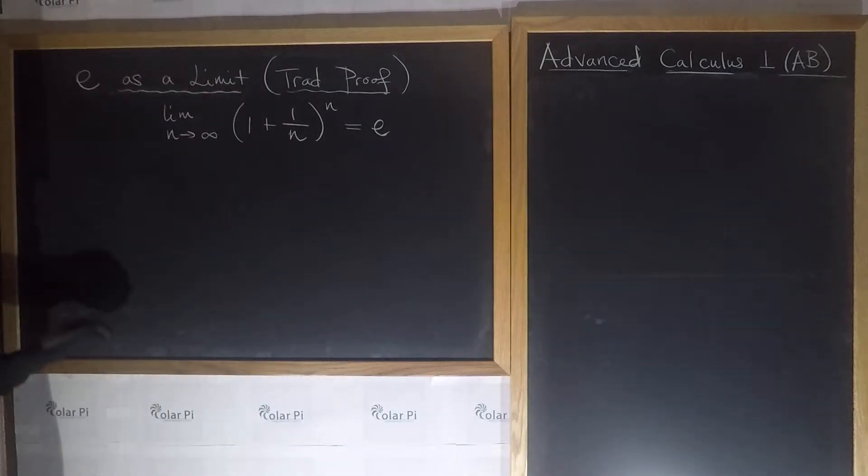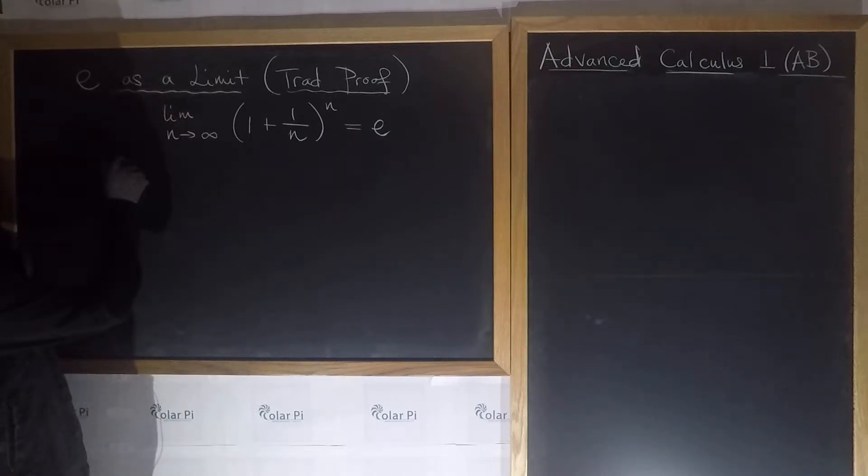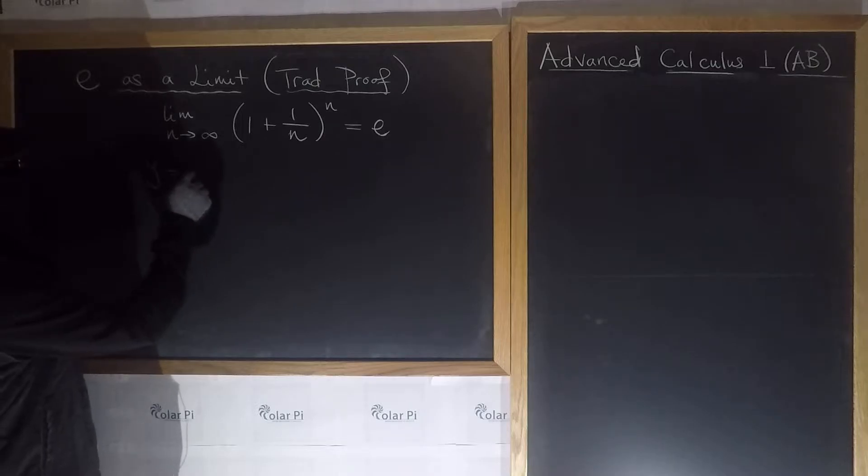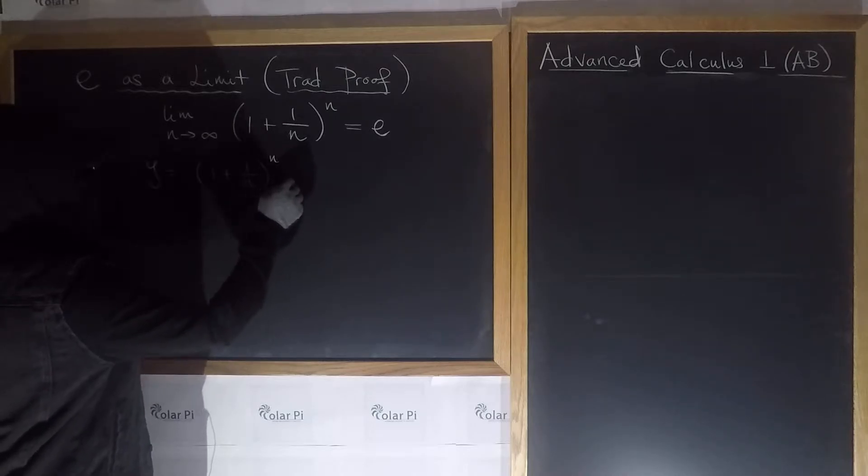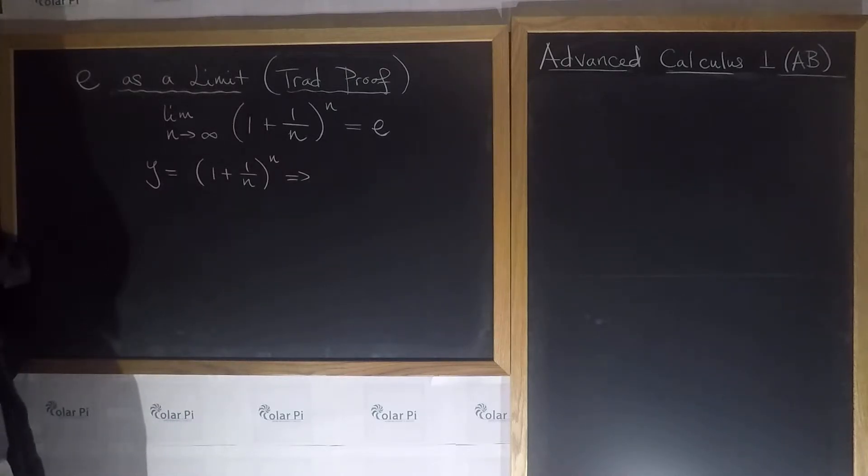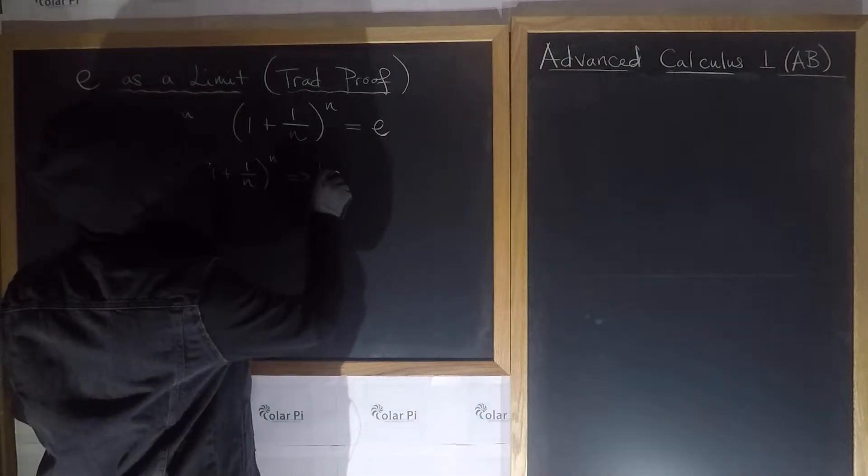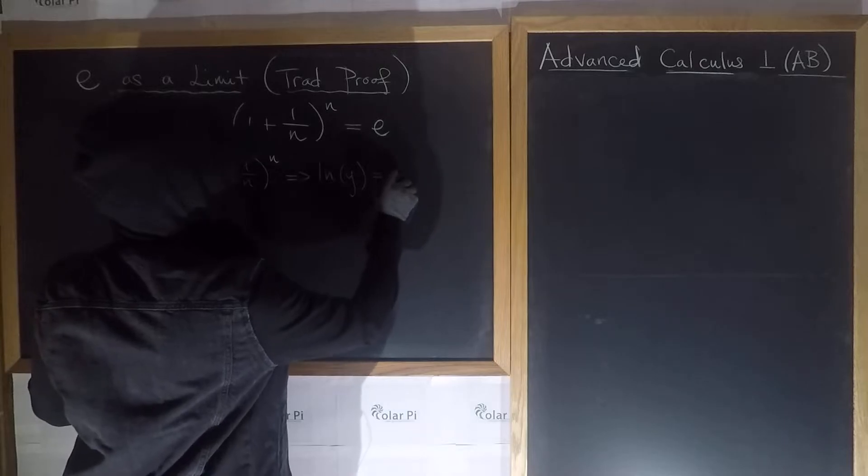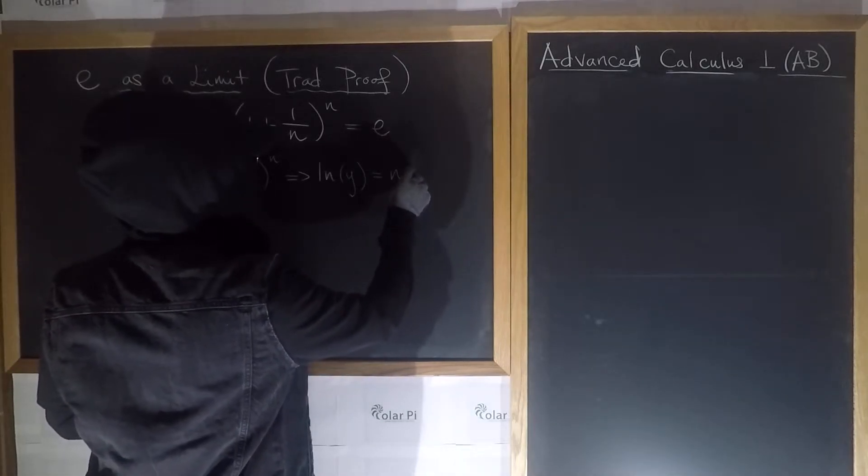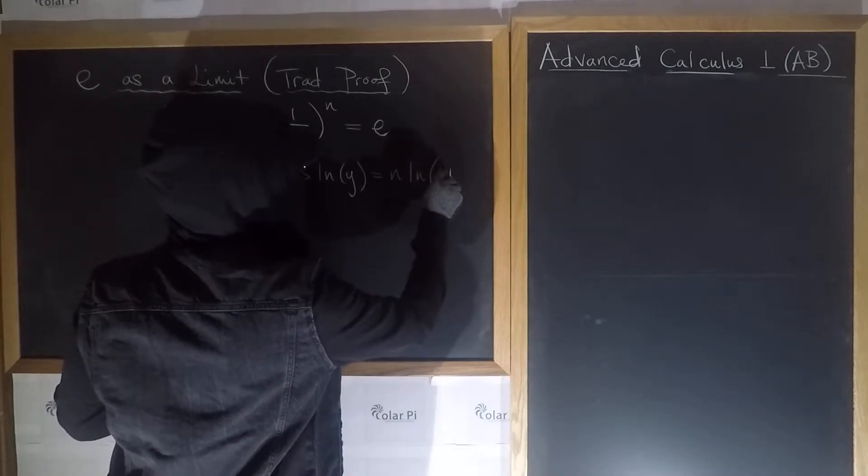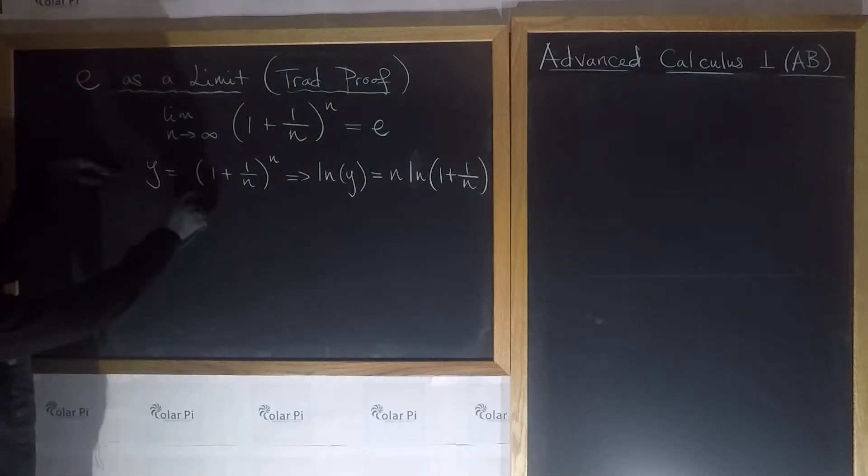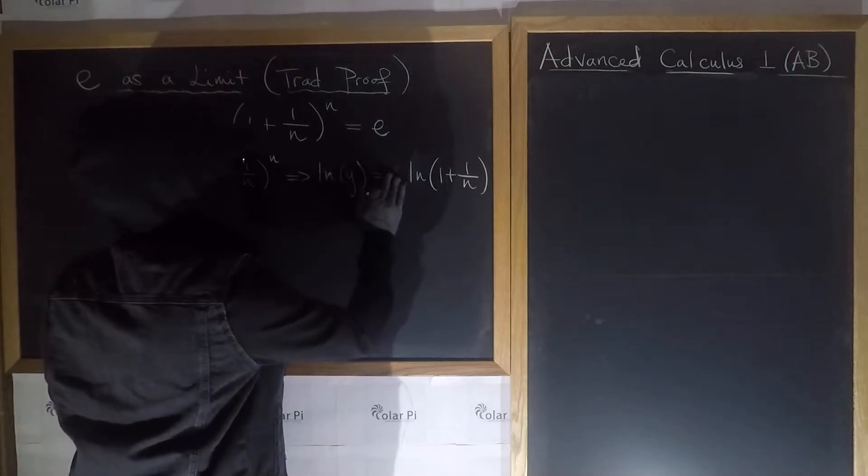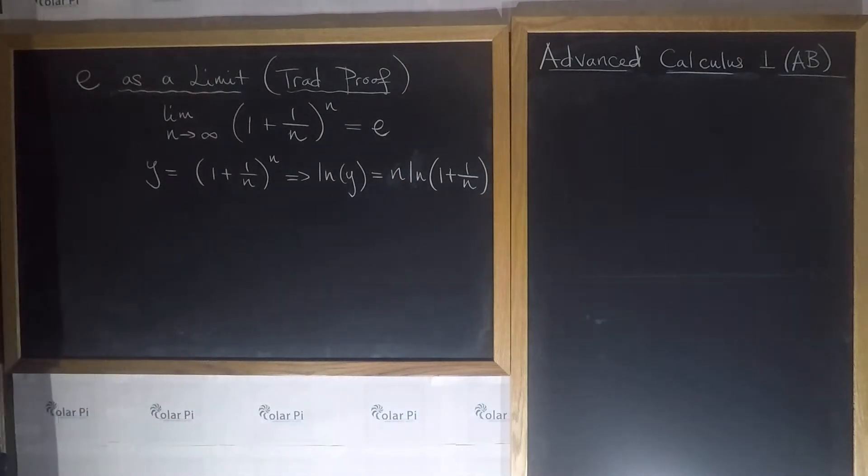So this is what we want to show. Now the traditional proof goes like this: let's let y equal (1 + 1/n)^n. If we let y equal this, then it follows that the natural log of y is equal to n times the natural log of (1 + 1/n). All I've done is take ln of this and ln of that, and then I used the log rules to bring down the power. So basically this n was here, and I could bring it down in front.